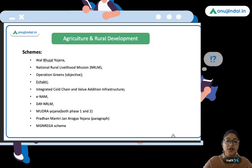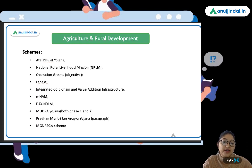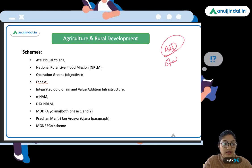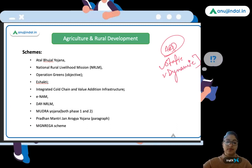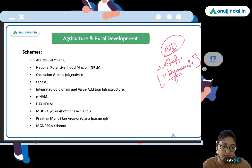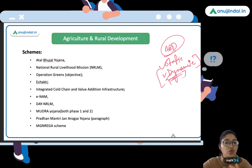Now let's decode what the ARD section covers. If you look at the ARD section, it has objective questions which include a static part — agriculture and rural development questions — and a dynamic part. In the static agriculture chapters, questions are not asked directly.